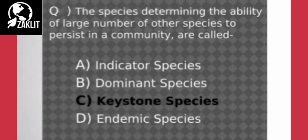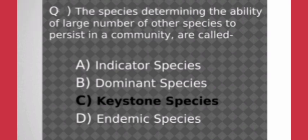The third question says: the species determining the ability of a large number of other species to persist in a community are called what? The correct answer, already highlighted, is keystone species. We need to understand why these species are so important in a community.